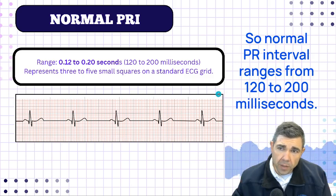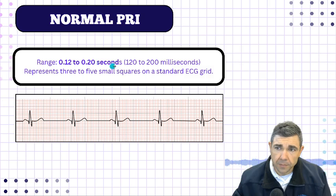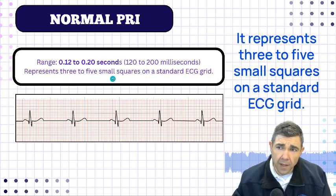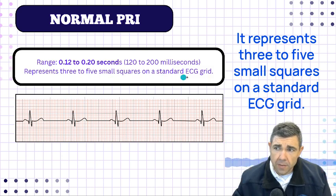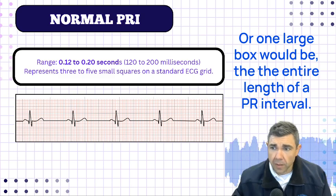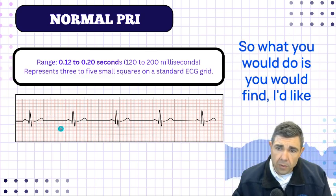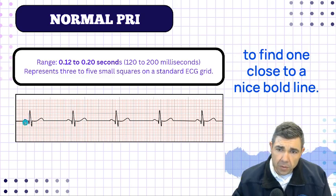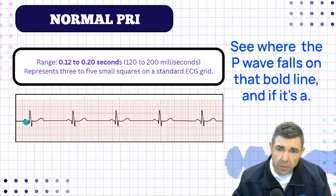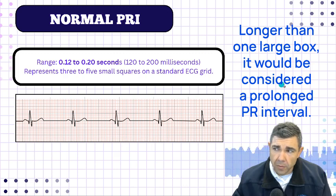Normal PR interval ranges from 120 to 200 milliseconds, or 0.12 to 0.20 seconds. It represents three to five small squares on a standard ECG grid, or one large box would be the entire length of a PR interval before it would be considered long. Find a P wave that falls on a bold line — if it's longer than one large box, it would be considered a prolonged PR interval.